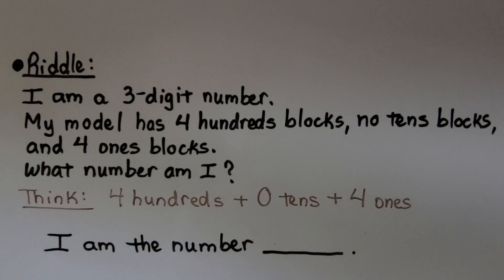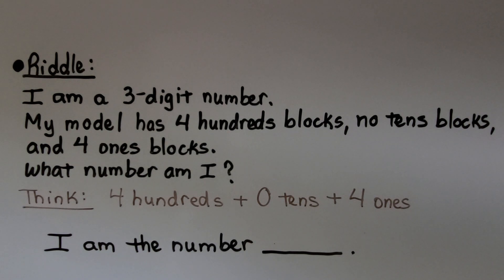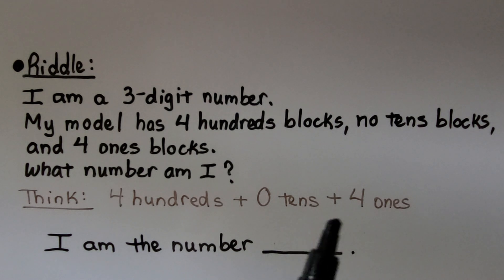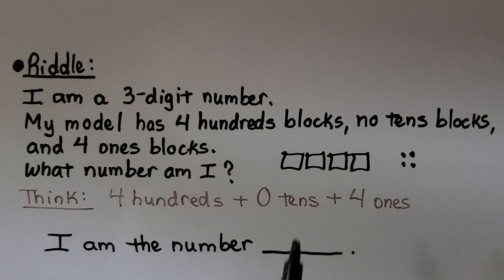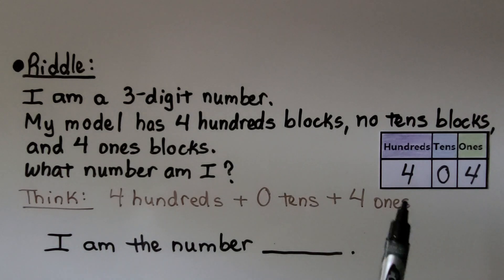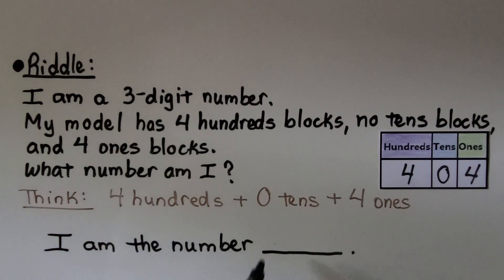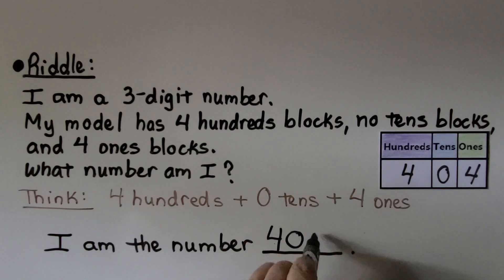Here we have a riddle: I am a three-digit number. My model has four hundreds blocks, no tens blocks, and four ones blocks. What number am I? We can draw a quick picture to help — four hundreds, no tens, four ones. We can also use a place value chart: four hundreds, zero tens, four ones. If you said four hundred four, you're right!